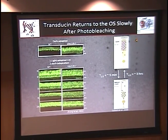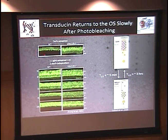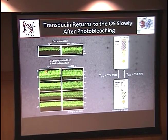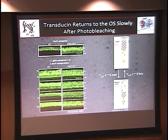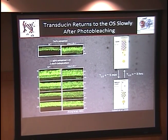To address the rate difference question, we made a UNC-119 knockout mouse. In dark-adapted conditions, we expect transducin in the outer segment — we see this in wild-type. After bright light for one hour and return to dark, at time zero transducin is shuttled to the inner segment. After three hours in the dark it's slowly returning; after six hours it's almost completely back in wild-type. However, in the knockout, even after 24 hours we're still seeing transducin in the inner segment. We were able to use our in vitro interaction data and animal model to recapitulate these findings.